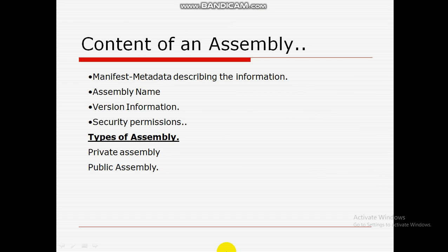The content of an assembly consists of a manifest file, an assembly name, version information, and security permissions. There are two different types of assembly.